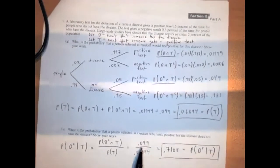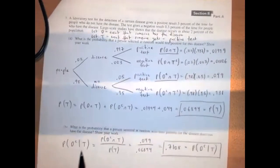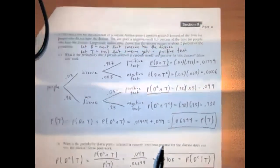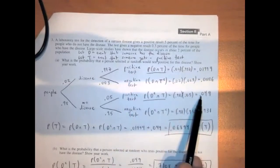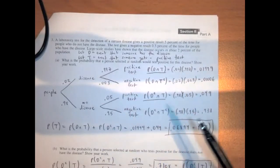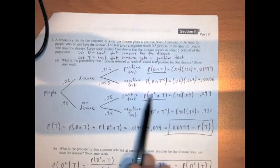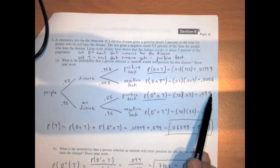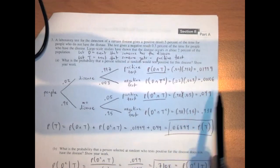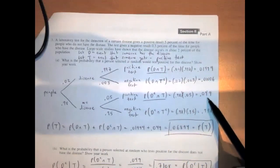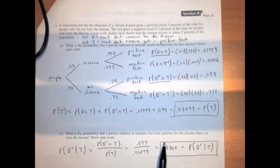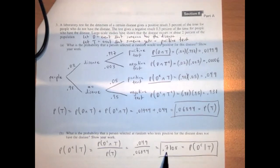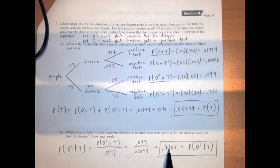Another way to think about this: we're looking at people who tested positive — these two branches of the tree. Of those, the ones who do not have the disease correspond to the second branch, which is why 0.049 is in the numerator over the sum 0.06894. That's actually a high probability — if you test positive for the disease, it's more likely that you do not actually have the disease than that you do, which is kind of interesting.